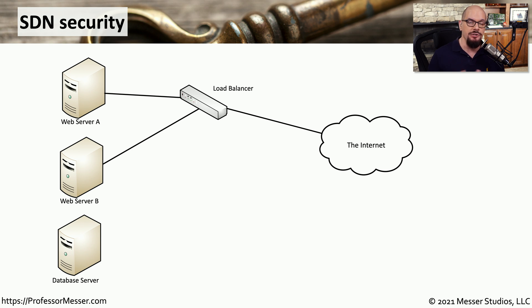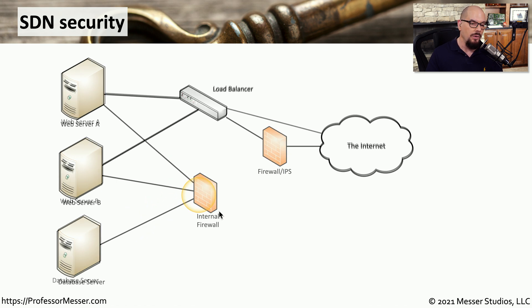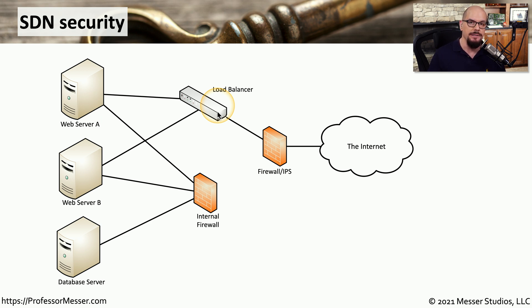Here's an example of deploying security devices using software-defined networking. Let's say we have an internet connection coming into a load balancer, and that load balancer is providing load across multiple web servers. We would like all of these web servers to be able to communicate with each other and also provide connectivity to a database server. We might deploy an internal firewall using software-defined networking that connects web server A, web server B, and the database server, managing the flows of traffic between all of those devices. We might also deploy a firewall or IPS between the internet and our load balancer to provide additional security to the web server front end. All of these devices are software based and can be deployed automatically using software-defined networking.